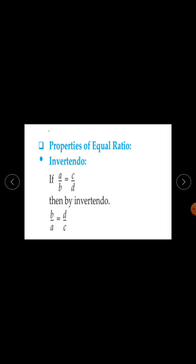Invertendo: if A upon B is equal to C upon D, then by invertendo property, we can write B upon A is equal to D upon C. This property is called invertendo.